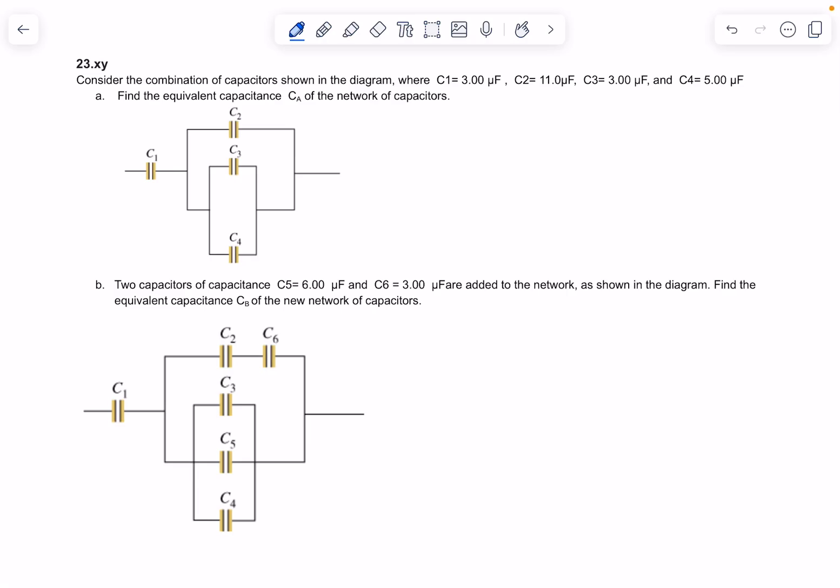Capacitance of a more complex situation like this, we've got C1 is 3, and then C2 is 11, C3 is 3, and C4 is 5. So you have to kind of break it down.